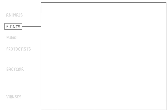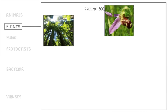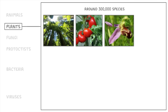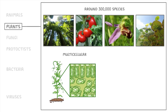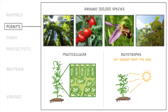Moving on to plants, this kingdom probably includes around 300,000 species, ranging from redwood trees, to bee orchids, to tomato plants, to water lilies. Like animals, plants are multicellular, so they're made up of lots of different cells. But importantly, they're autotrophs rather than heterotrophs — this means they get their energy from the sun using photosynthesis, rather than by consuming other organisms.